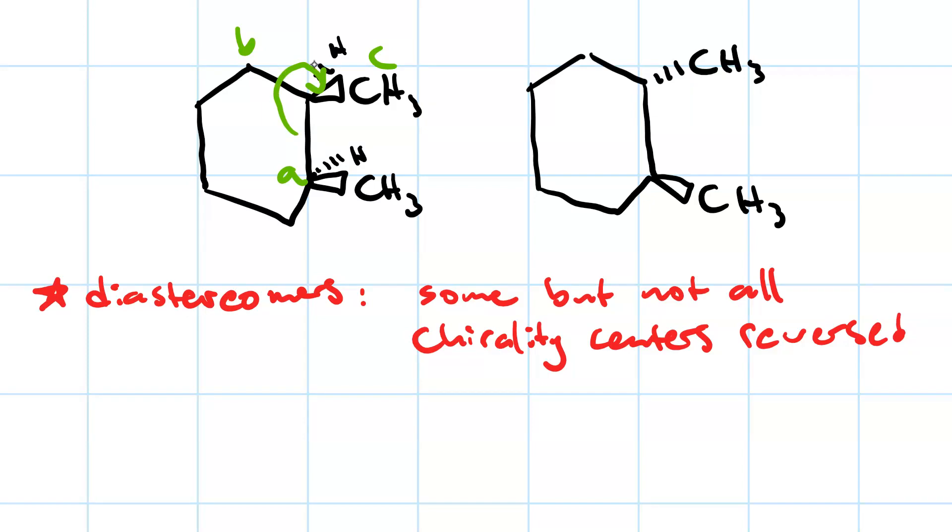So, ABC is clockwise with the lowest priority group on the dash. That means this top chirality center in the molecule on the left is R.